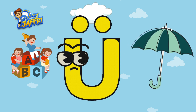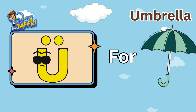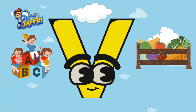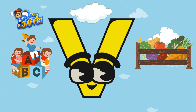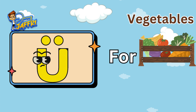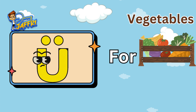U. U for umbrella. U-M-B-R-E-L-L-A, umbrella. V. V for vegetables. V-E-G-E-T-A-B-L-E-S, vegetables.